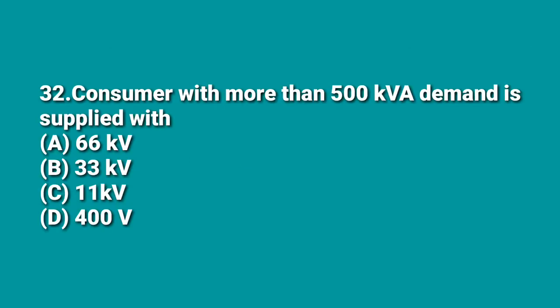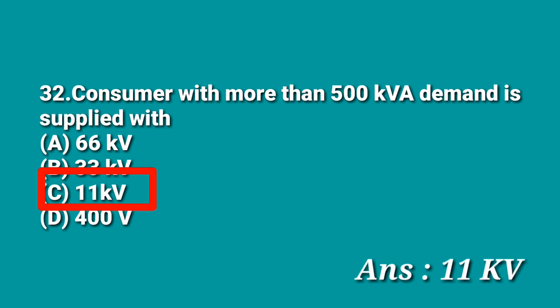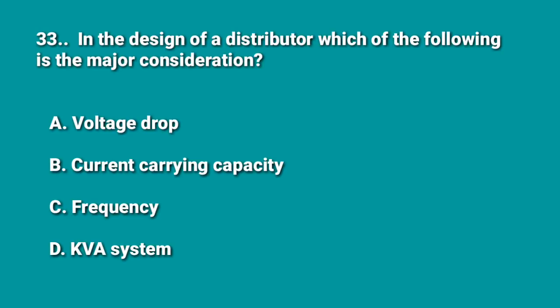A consumer with more than 500 kVA demand is supplied at which voltage level — 66 kV, 33 kV, 11 kV, or 400 volts? 400 volts is normally for small distributors and small-scale industries. For more than 500 kVA maximum demand, 11 kV or 33 kV is the answer.